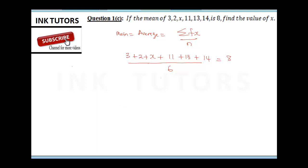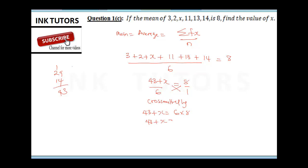Summing the known numbers: 3 plus 2 plus 11 plus 13 plus 14 gives us 43. So we have (43 + x) over 6 equals 8. Cross multiplying: 43 plus x equals 48. Collecting like terms: x equals 48 minus 43, therefore x equals 5.